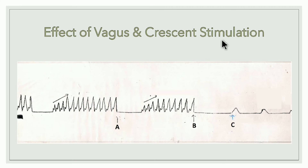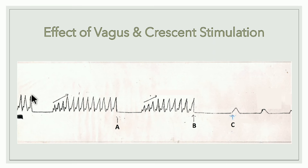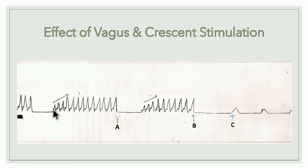Effect of vagus and crescent stimulation: vagus contains preganglionic parasympathetic fibers; crescent is a crescentic structure between the sinus venosus and atria containing postganglionic parasympathetic fibers. First the normal cardiogram is recorded. When strong vagus stimulation is given, the heart stops (straight line). Then the sinus venosus starts beating again, followed by recovery with staircase phenomenon (due to beneficial effect, not increased stimulus strength).